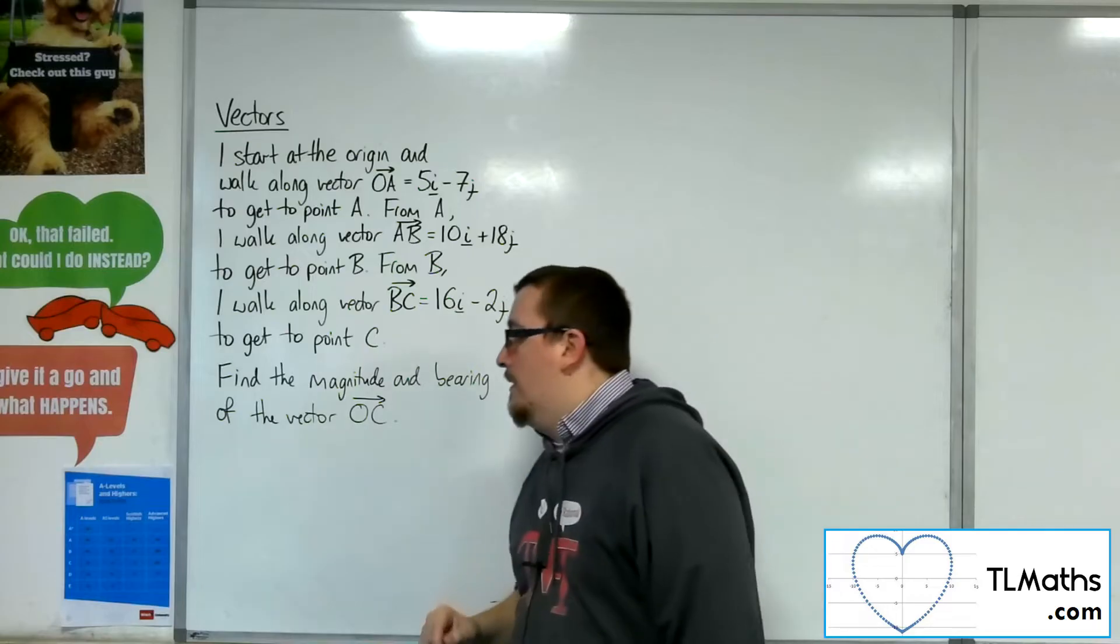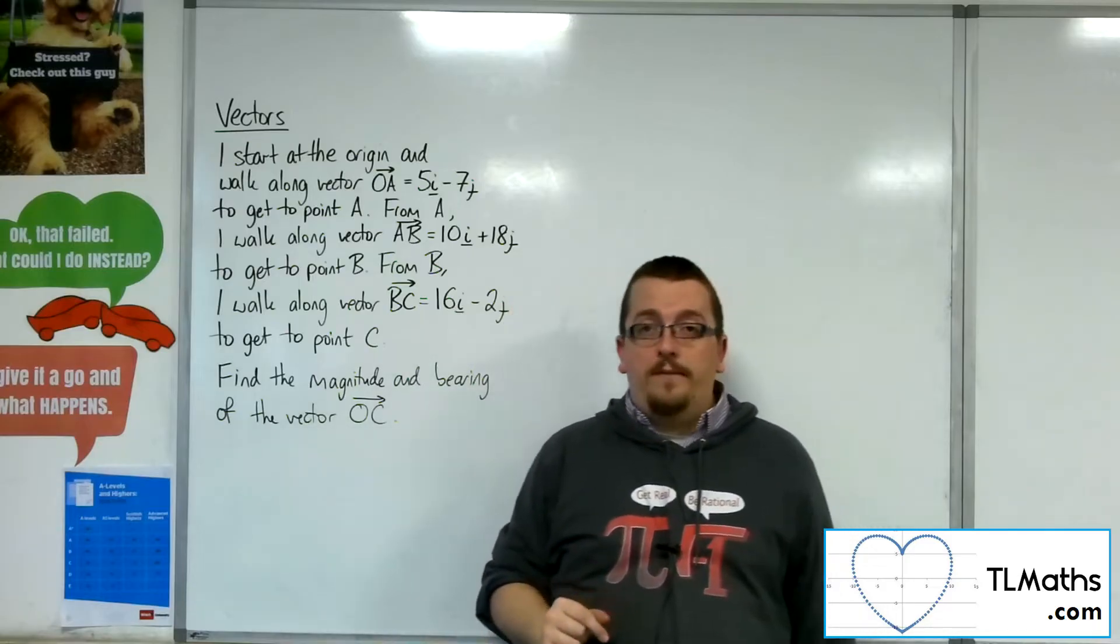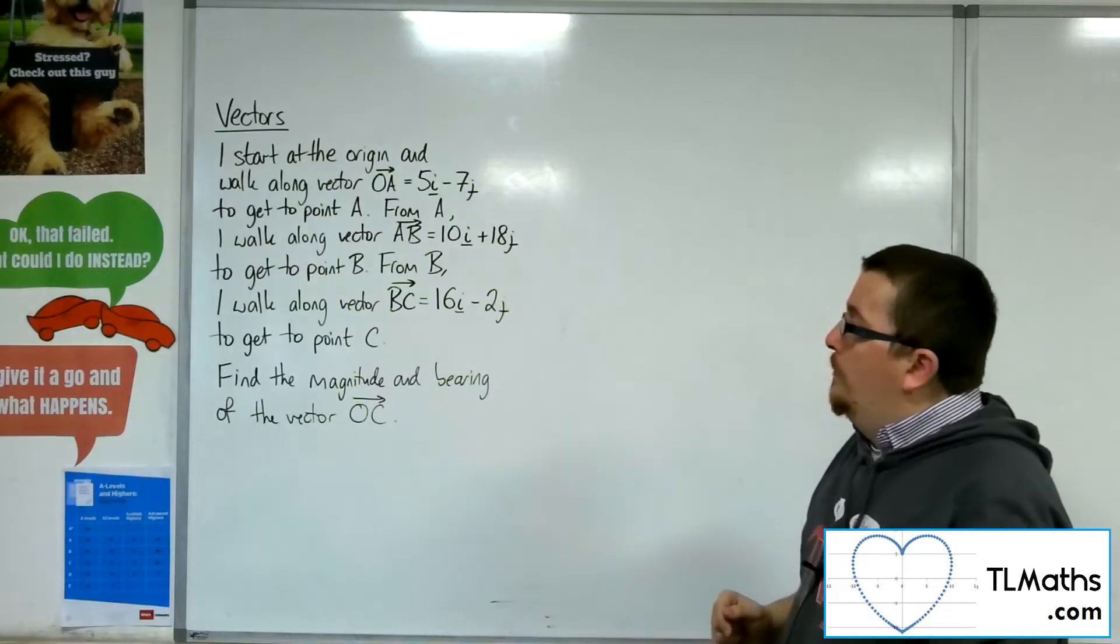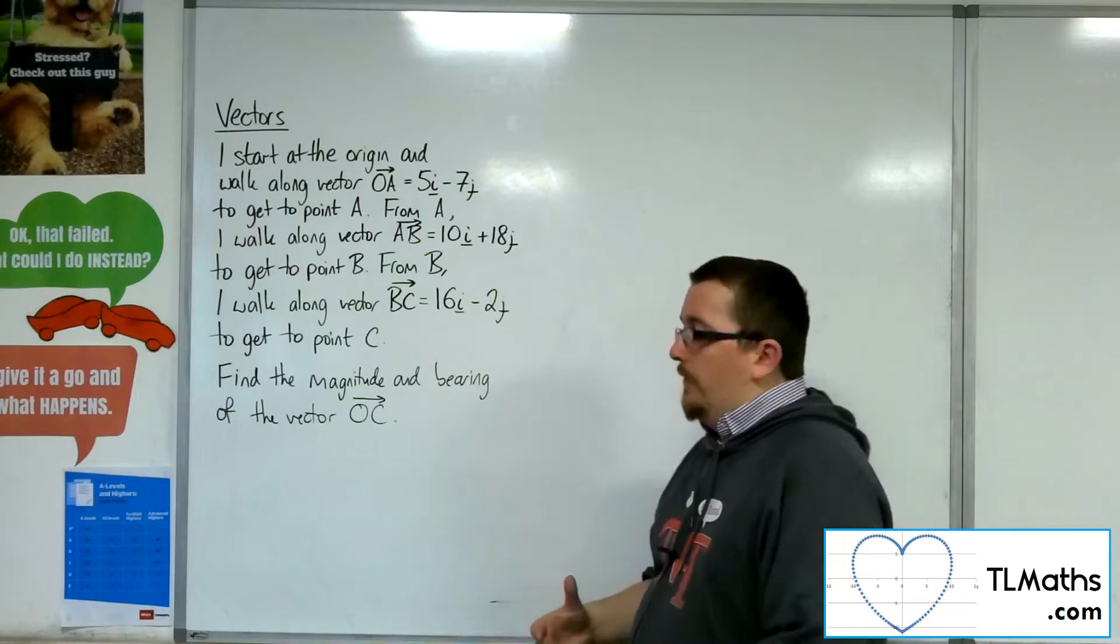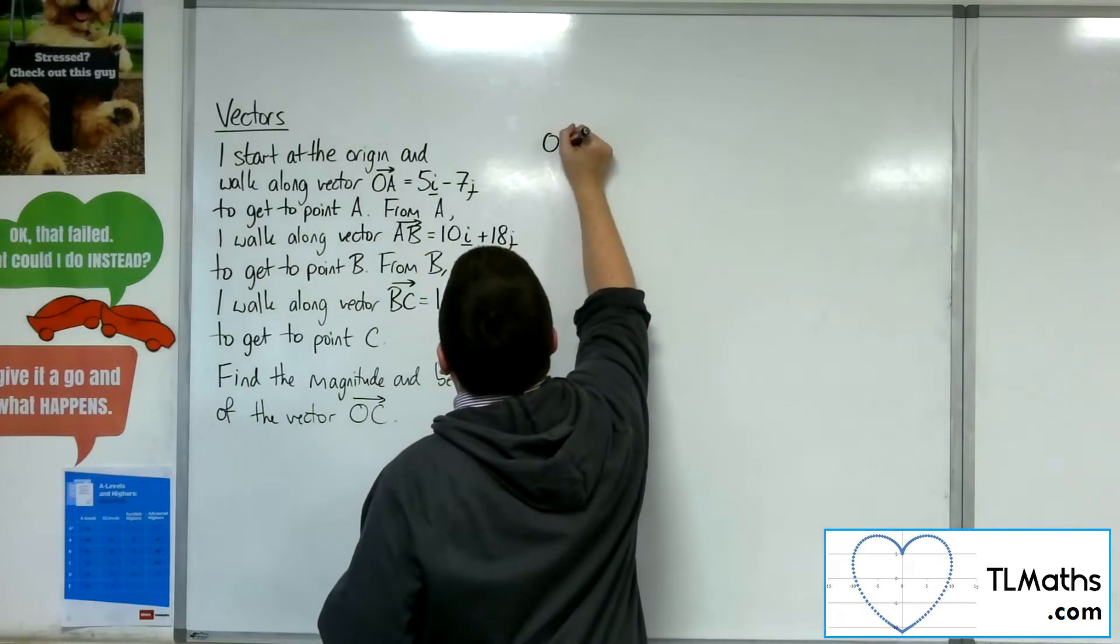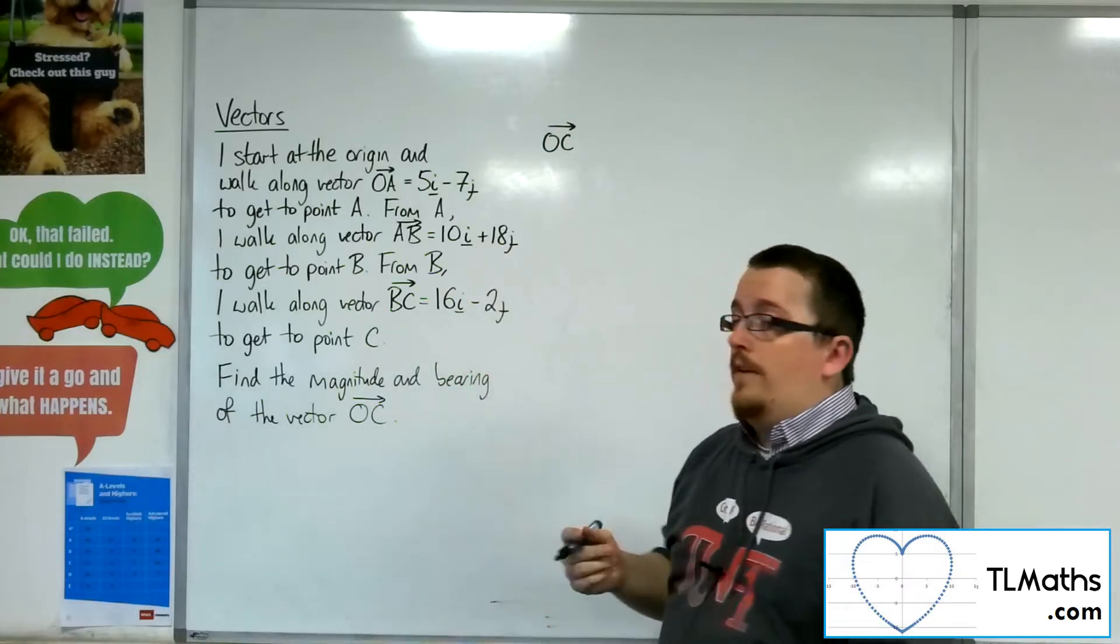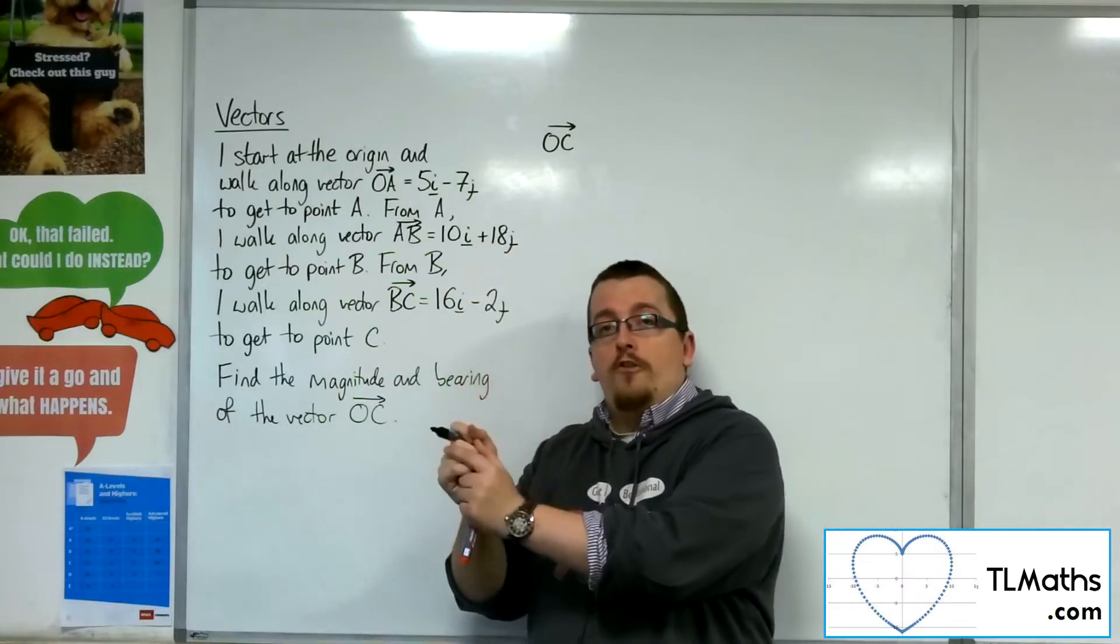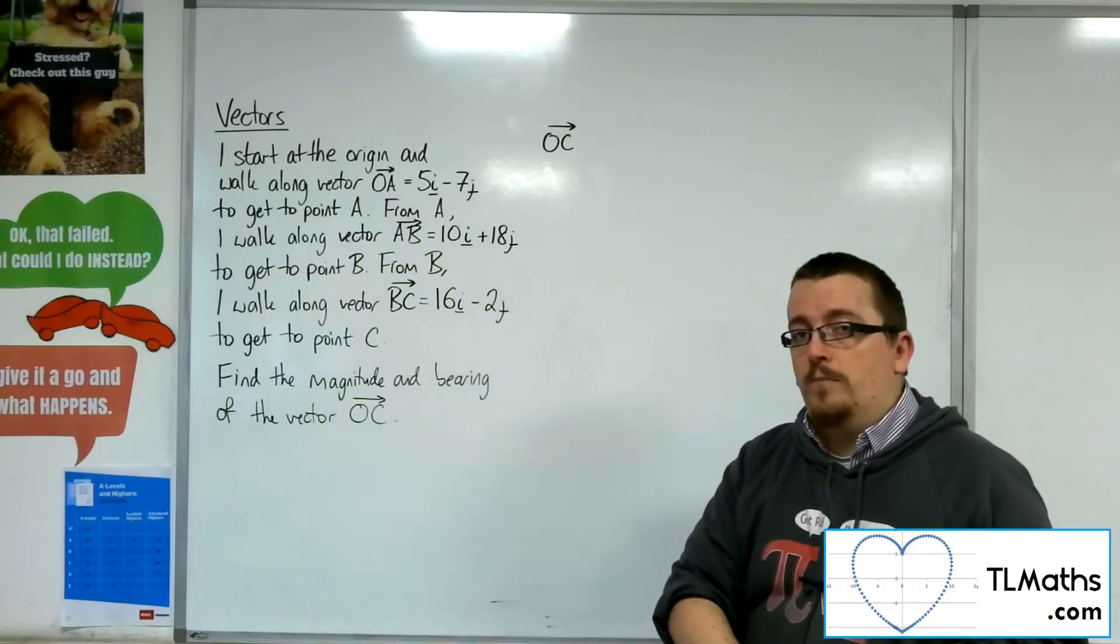Find the magnitude and bearing of the vector OC. What we need to recognize from this is that OC would be the vector I would travel along, as if I just went straight from the origin to my final destination, the point C.